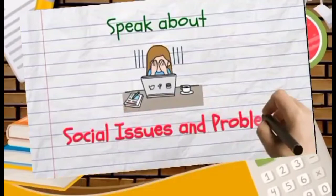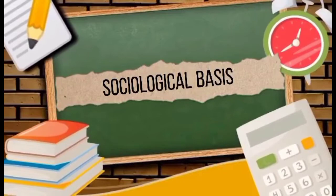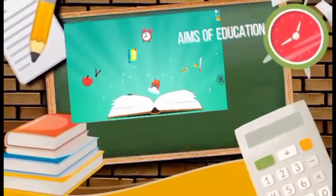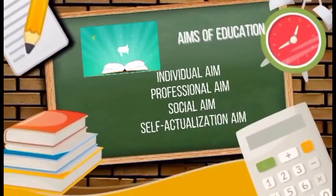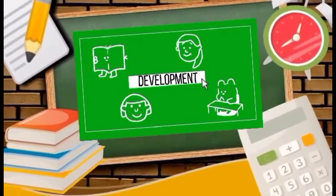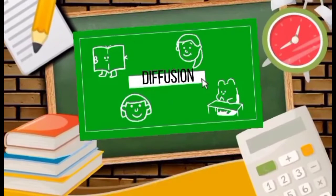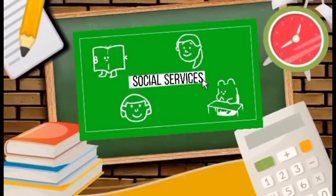The sociological foundation of the school curriculum has several bases. One is the aims of education, which tackles individual aims, professional aims, social aims, and self-actualization aims. Education aims for the development of social feelings and qualities of an individual to be a socially efficient learner. It improves vocational efficiencies and recreational pursuits, and serves as a basis for transmitting basic values of social heritage and diffusing knowledge to learners. Education also aims for social service, social efficiency, emotional integration, national unity, and patriotism.